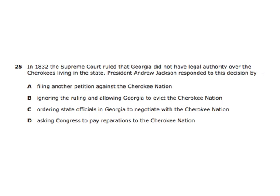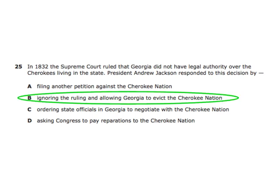In 1832, the Supreme Court ruled that Georgia did not have legal authority over the Cherokees living in the state. President Andrew Jackson responded by ignoring the ruling and allowing Georgia to evict the Cherokee Nation. Even if you forgot this, remember: Andrew Jackson did the Indian Removal Act leading to the Trail of Tears — he overruled the Supreme Court. All of our knowledge of Jackson points to that one answer.